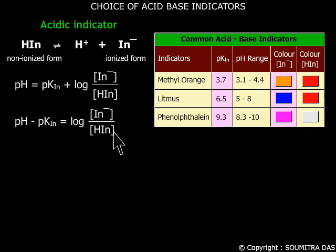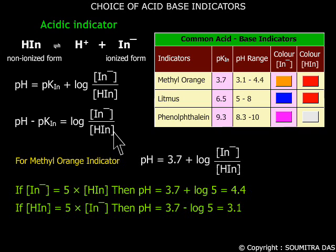For a particular color to predominate, the species responsible for that particular color should be at least 5 to 10 times greater than the species responsible for the other color. For example, methyl orange indicator where the pK(indicator) is equal to 3.7.